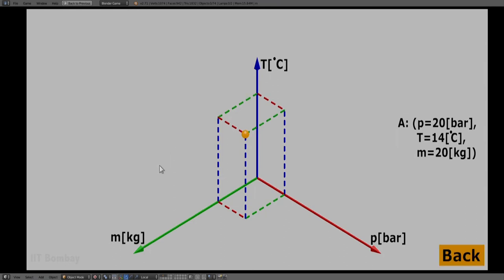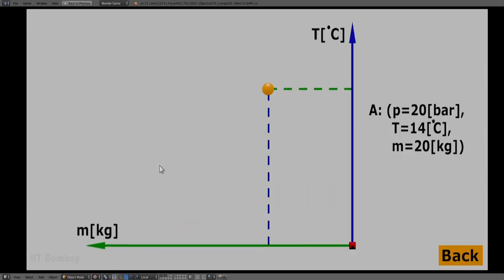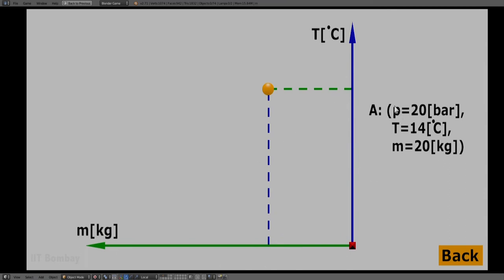Alternatively, we could have the mass-temperature projection. Here, because the axes are mass and temperature, the pressure component is not projected.